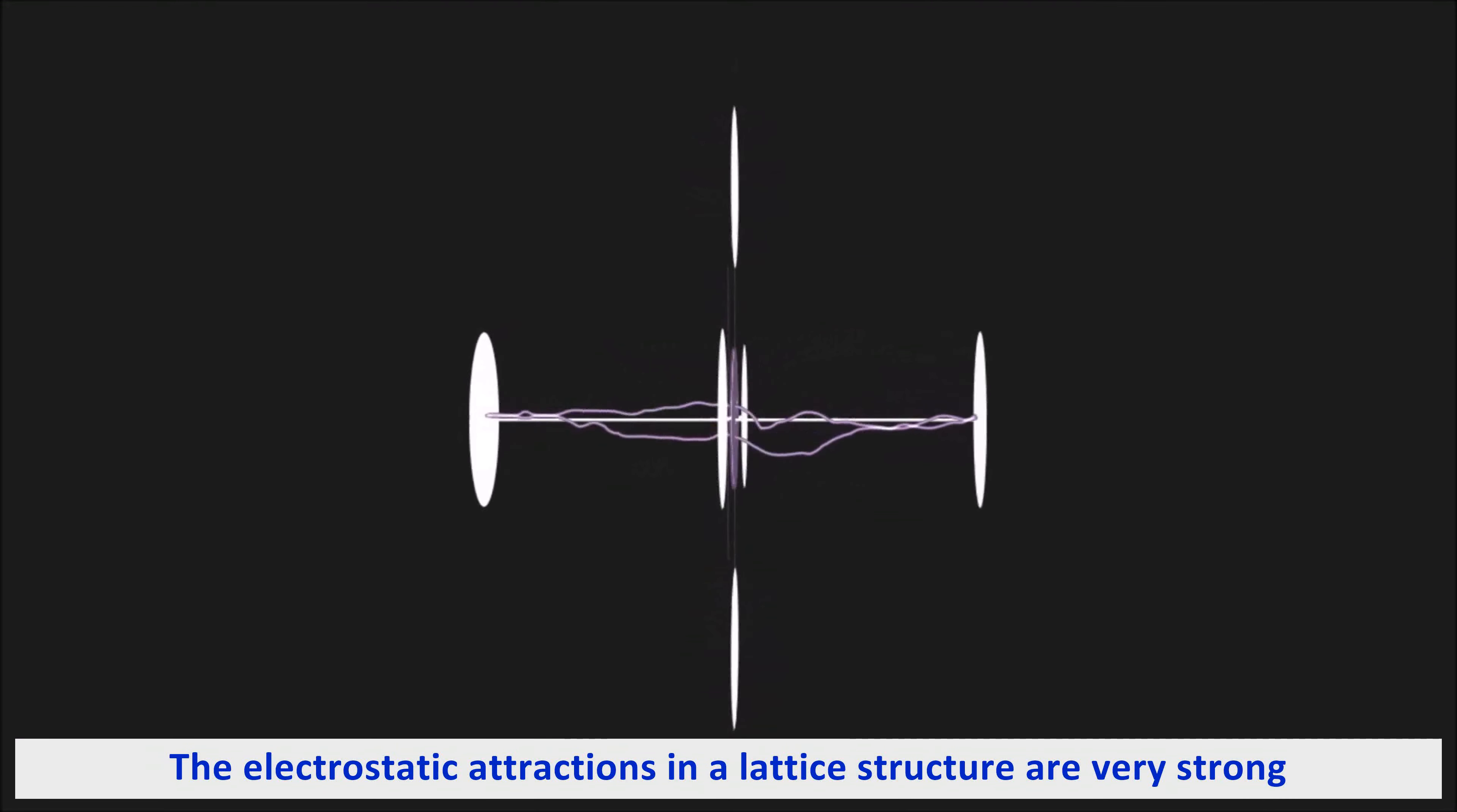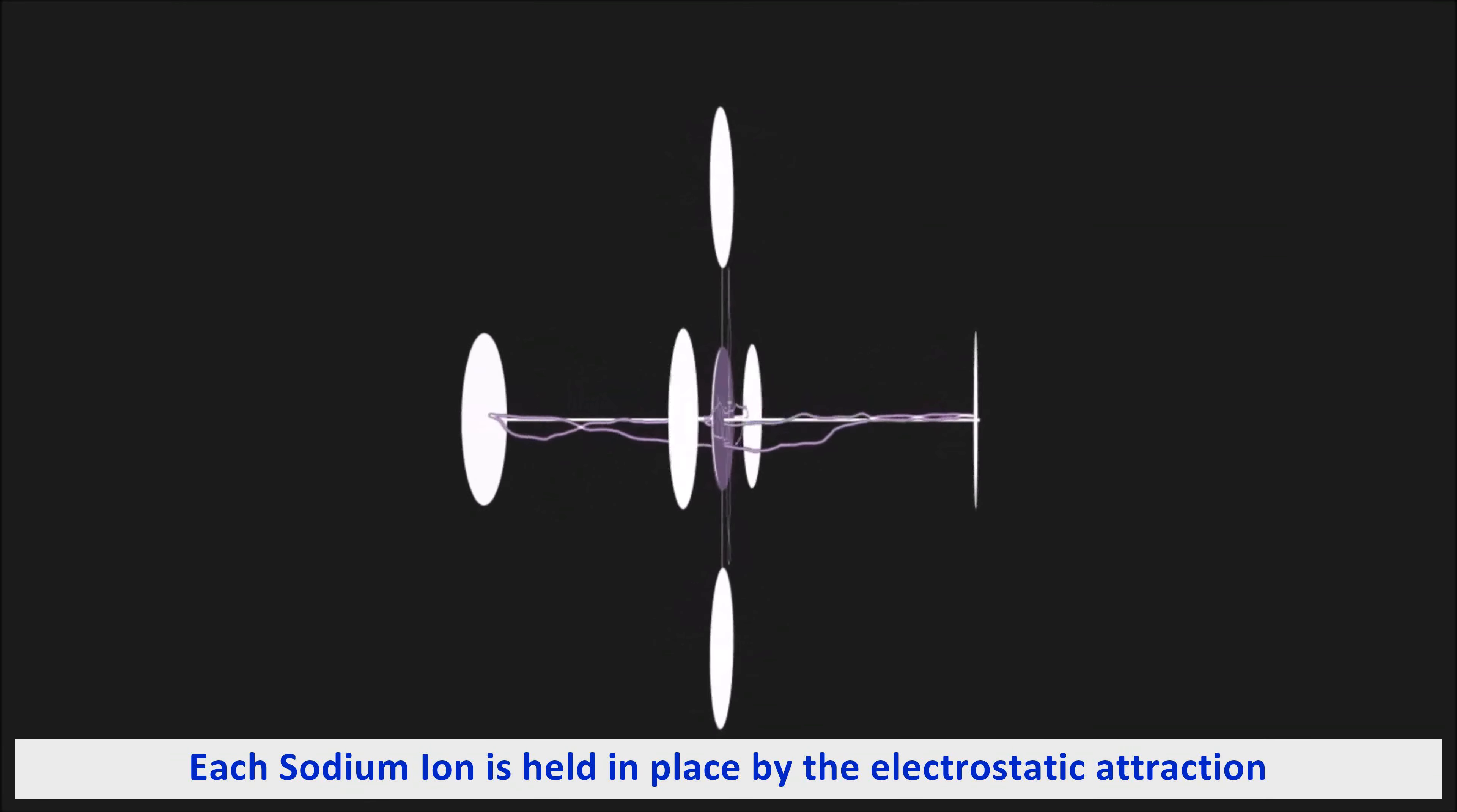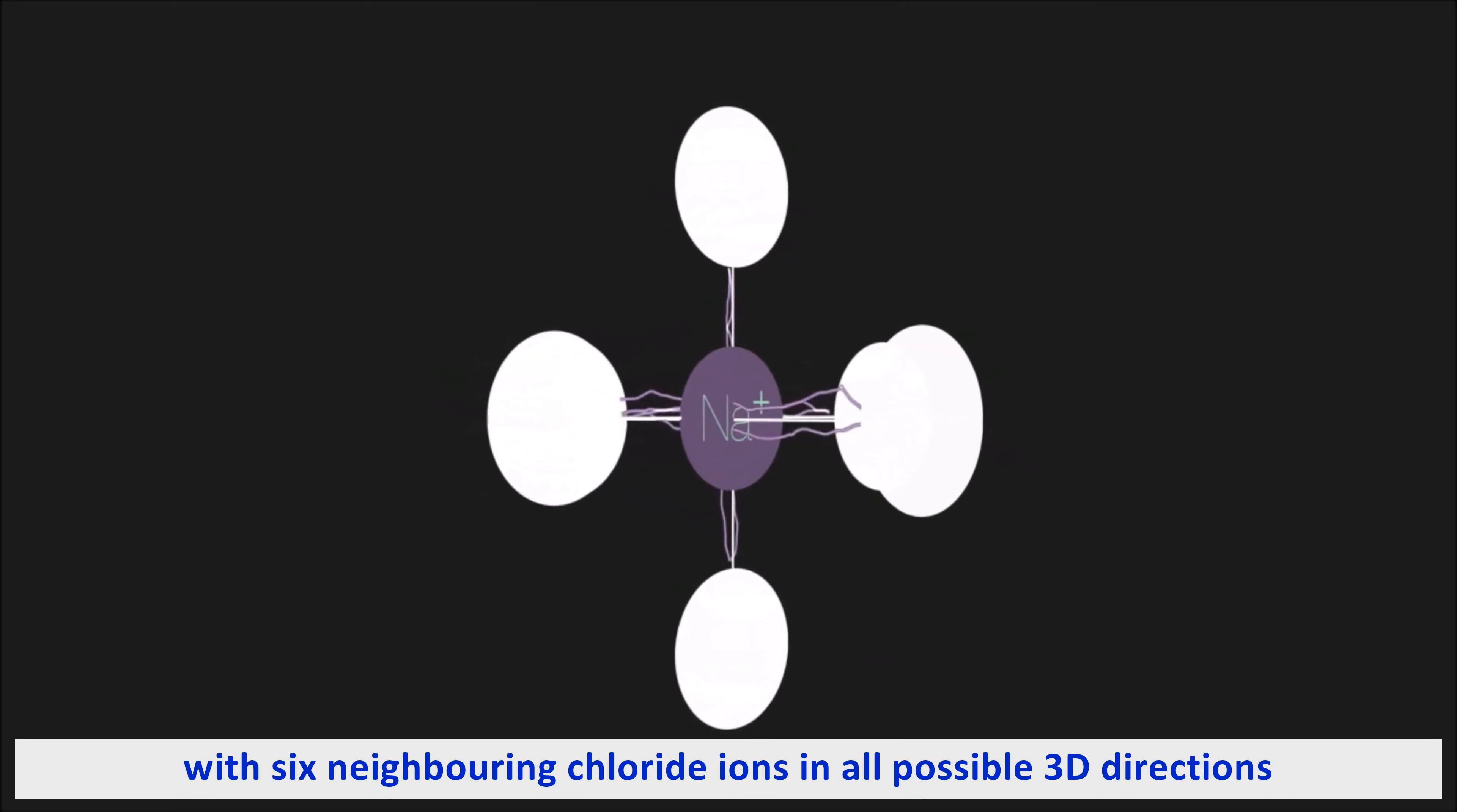The electrostatic attractions in a lattice structure are very strong. Let's think about it. Each sodium ion is held in place by the electrostatic attraction of six neighboring chloride ions, in all possible 3D directions.